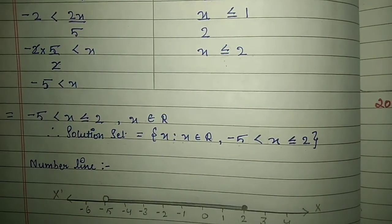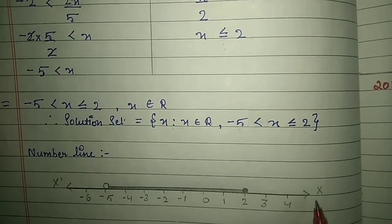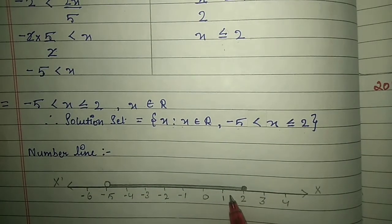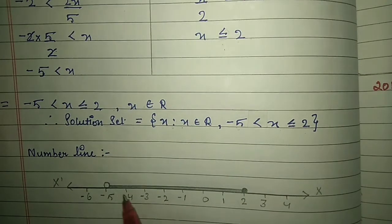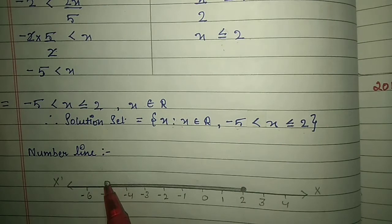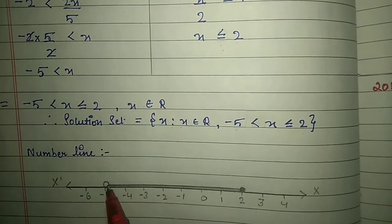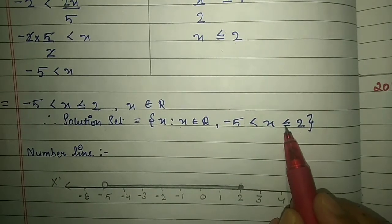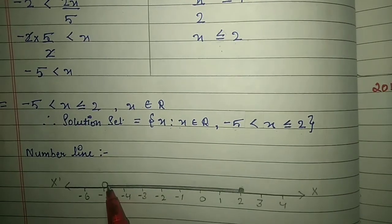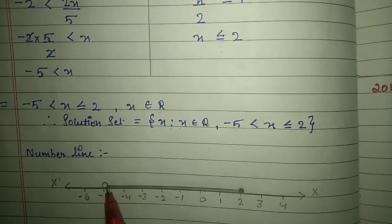Represent this on the number line using pencil and scale. Mark arrows on both sides with 0 at center, positive integers on the right, negative on the left. Mark minus 5 and 2. At minus 5 — where only a less than symbol applies — draw a hollow circle. At 2 — where equal to is also present — draw a solid circle. Join the two points with a line. Remember, for real numbers you draw a line.